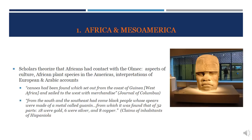According to Christopher Columbus's log, the purpose of his third voyage was to test the claims of King John II of Portugal that canoes had been found setting out from the coast of Guinea sailing west with merchandise, as well as claims from native inhabitants of Hispaniola that black people from the south and southeast carried spears made of a metal called guanine — composed of 18 parts gold, 6 silver, and 8 copper. Taken together, the African plant species found in the Americas, alongside these accounts from Native Americans, Europeans, and Arabs, makes it reasonable that Africa and Mesoamerica had some contact prior to Columbus.